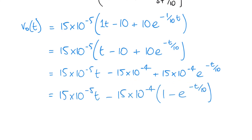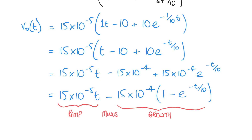Factoring out 15 times 10 to the minus 4 from the latter two terms, the response can be written as 15×10⁻⁵ t minus 15×10⁻⁴ times the bracket 1 minus e to the power minus t over 10. This reveals that the response is a ramp function (15×10⁻⁵ t) minus a growth function (1 minus a decay), which is the characteristic shape of a first-order system response to a ramp input.